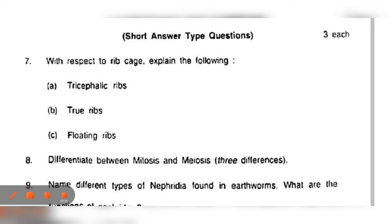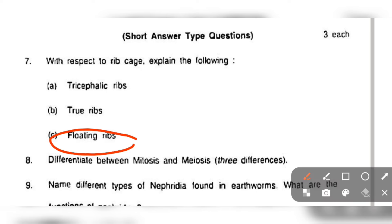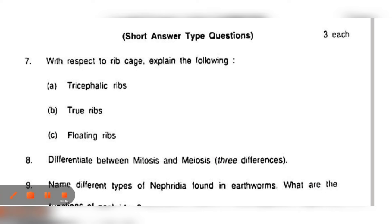Now we can write the floating ribs. The last ribs are our last ribs, the eleventh and the twelfth. These are the floating ribs. We can say that they are not connected ventrally to the sternum. True ribs, they are connected ventrally to the sternum. And then we have the tricephalic ribs.